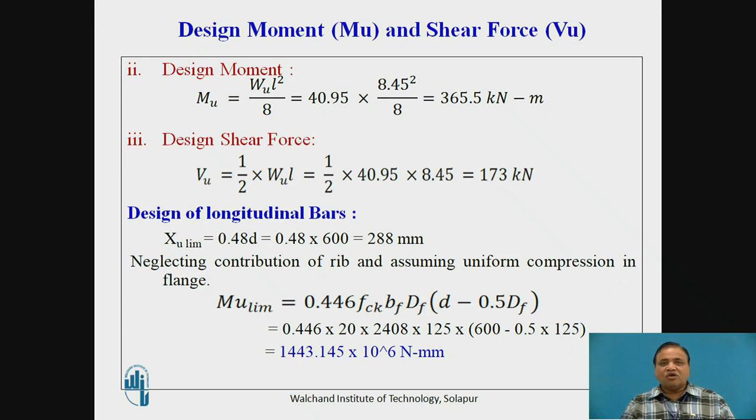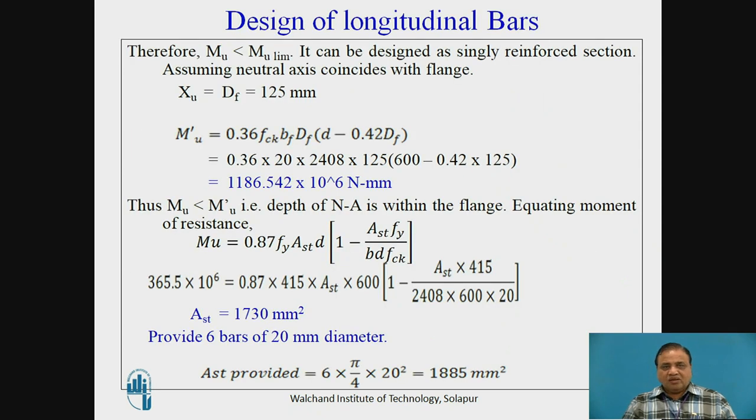Design of longitudinal bars: we have to find out the longitudinal reinforcement required. Xu limit as per Fe415 steel is 0.48d, it works out to be 288 mm. Neglecting contribution of rib, assuming uniform compression in the flange, Mu limit is given by 0.446 × fck × Bf × df × (1 - 0.5 × df). This works out to be 1443.145 × 10⁶ N-mm.